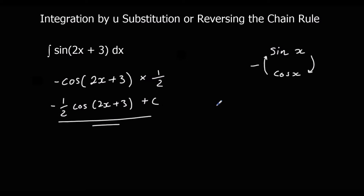So the method is: integrate normally, and divide by the bracket differentiated.